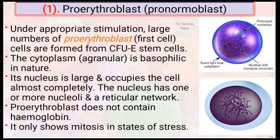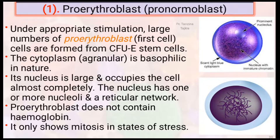At first, proerythroblast — another name is pronormoblast. Under appropriate stimulation, a large number of proerythroblast cells are formed from the colony-forming unit of erythrocyte stem cell. The cytoplasm is basophilic in nature. Its nucleus is large and occupies the cell almost completely, with one or more nucleoli and a reticular network. Proerythroblast does not contain hemoglobin and only shows mitosis.